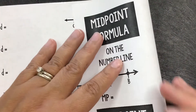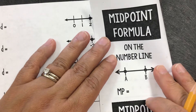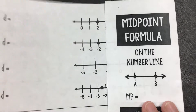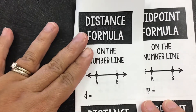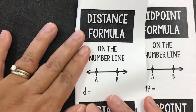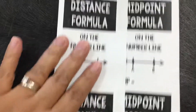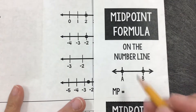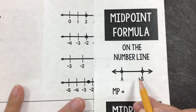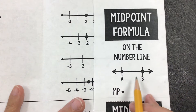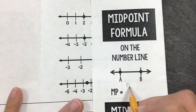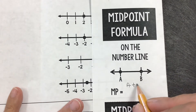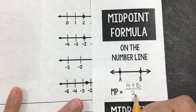This is the handout for the midpoint formula and the distance formula that we're going to fold. We're going to first start with the midpoint formula on the number line. What we have to do is just add the two points together — going from left to right, that'd be a plus b, and divide by 2. So it's sort of an average of that distance. We'll add them together and divide by 2.